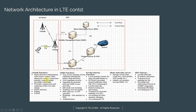Your eNodeB is responsible for radio resource management, bearer control, admission control, connection and mobility control, uplink and downlink scheduling, IP header compression and ciphering of the user data stream. It's also responsible for MME selection and for paging idle mode subscribers at the request of the MME.